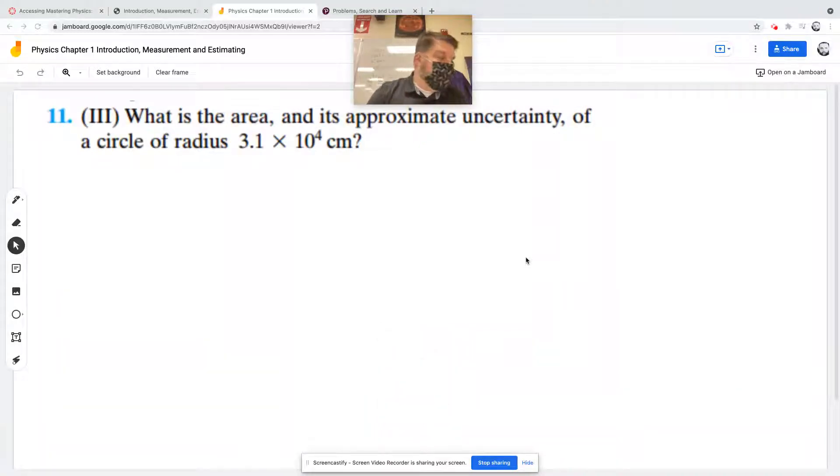Alright, so for question number 11, it asks us what is the area and its approximate uncertainty of a circle with a radius of 3.1 times 10 to the 4th centimeters. In physics, you really like to draw pictures. So I'm going to draw a picture of a circle. I encourage you to do the same.